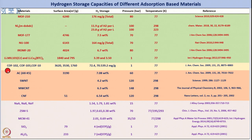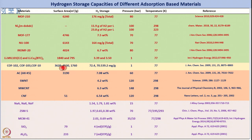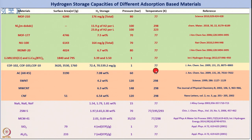There are also covalent organic frameworks: COF-102 and COF-103 with surface areas of 3620 and 3530 m²/g respectively, and COF-10 with 1760 m²/g. They have been reported to store 72.4 and 70.53 mg/g of material respectively at 1 bar and 77 K.